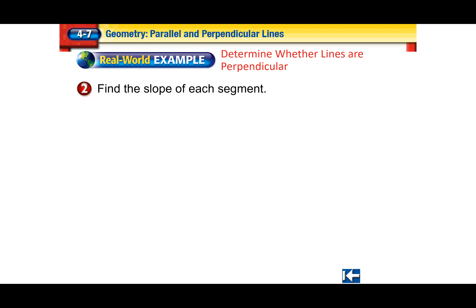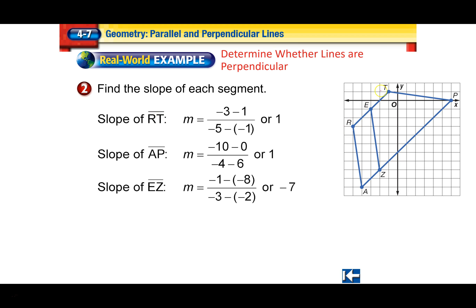Find the slope of each segment. The slope of RT uses points that look like negative 1, 1 and negative 5, negative 3 — that gives a slope of 1. Same for AP, which also comes out to a slope of 1. The slope of EZ, from point negative 3, negative 1 to point negative 8, negative 2, comes out to negative 7. That is not the negative reciprocal: 1 times negative 7 equals negative 7, not negative 1.